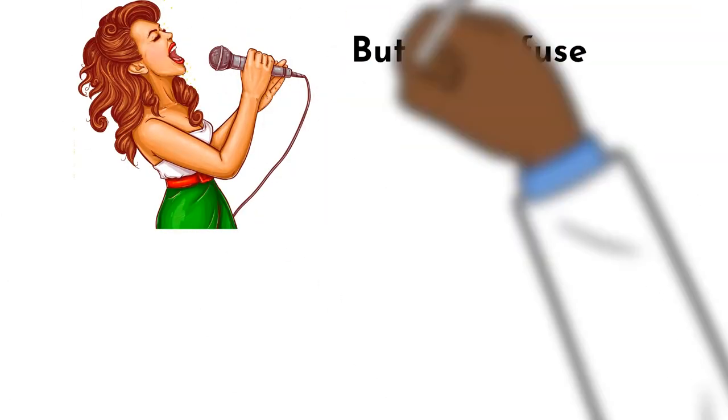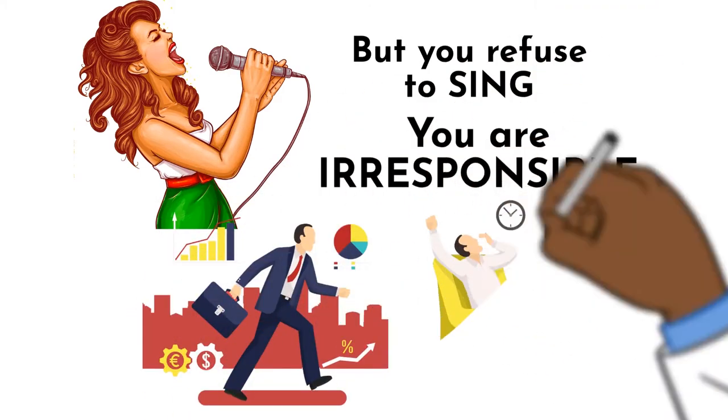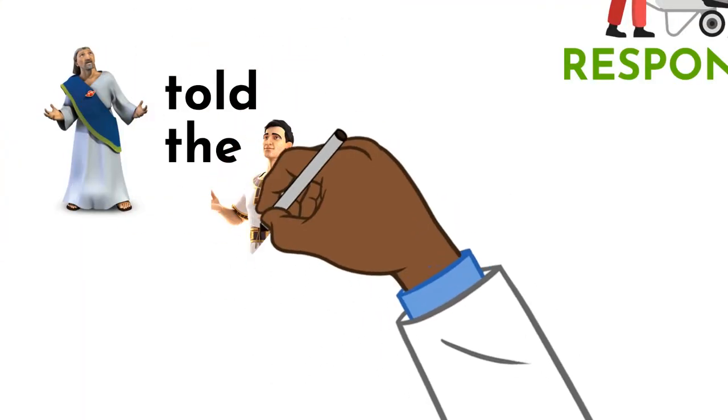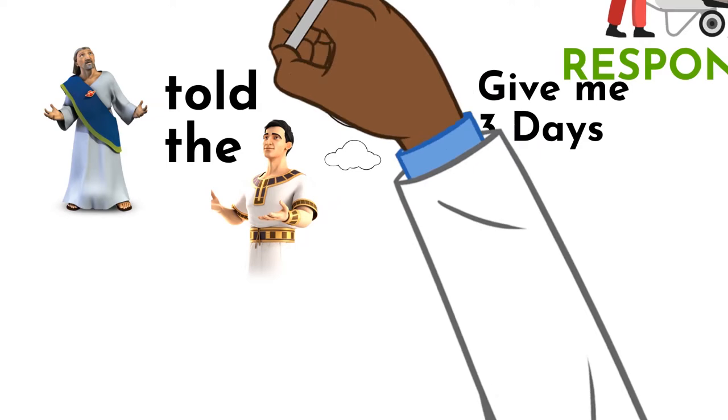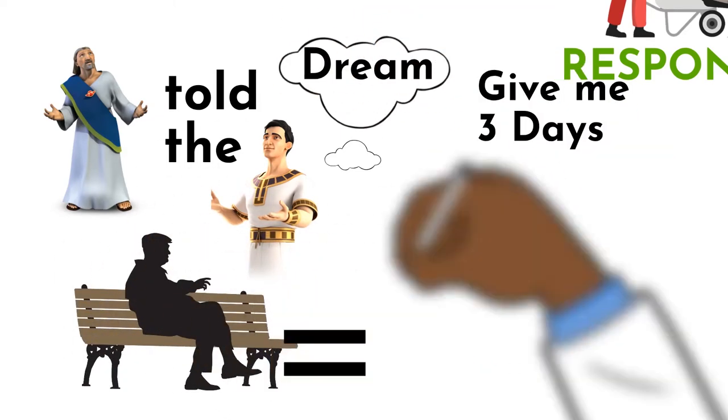You can sink but you refuse to sink - you are irresponsible. Whatever you can do that you are not doing, you are irresponsible. Daniel told the king, 'Give me three days. The dream you've had, I will come and tell you.' When you spend time alone, being alone is even a gift for Daniel.